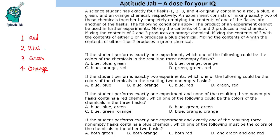For example, if he mixes flasks 1 and 2, he can empty 2 into 1 or empty 1 into 2. The following conditions apply: the product of an experiment cannot be used in further experiments. So if he has mixed 1 and 2, he cannot use that mixture again.